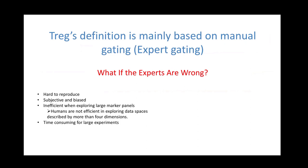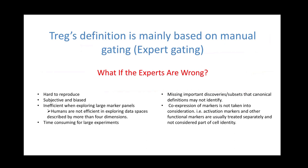Expert gating is hard to reproduce and very subjective. When you have a large panel of markers, it's inefficient — humans cannot explore data spaces with such multidimensional data. It's very time-consuming for large experiments. Additionally, we may be missing important discoveries or cell subsets outside the conventional definition of a population like T-regs. With two-dimensional gating, co-expression of markers is not taken into consideration, functional markers can be treated separately, and cell identity is not comprehensive enough.